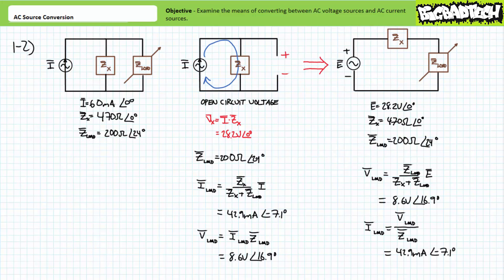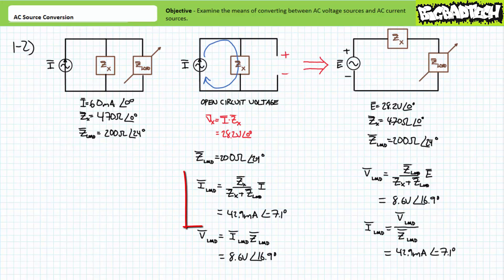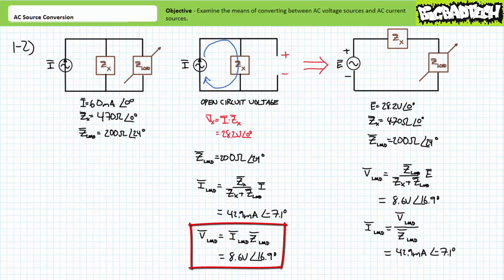As proof of this equivalency, our original configuration is a perfect setup for the AC current divider rule. We know incoming current and we know both impedances in a parallel combination of two elements. An application of the AC current divider rule demonstrates current through the variable load impedance will be 42.9 milliamperes at an angle of negative 7.1 degrees. A subsequent application of Ohm's Law demonstrates voltage across the variable load impedance will be 8.6 volts at an angle of 16.9 degrees.